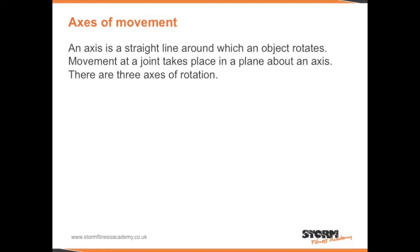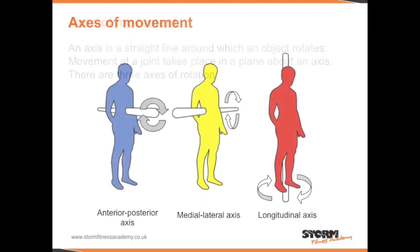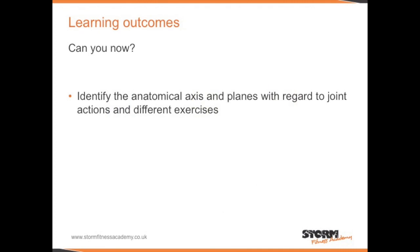Axis of movement: an axis is a straight line around which an object rotates. Movement at a joint takes place in a plane about an axis. There are three axes of rotation. The first is the anterior-to-posterior axis, which occurs in the frontal plane. The second is the medial-to-lateral axis, which occurs in the sagittal plane. The third is the longitudinal axis, which occurs in the transverse plane. Can you now identify the anatomical axis and planes with regard to joint actions and different exercises?